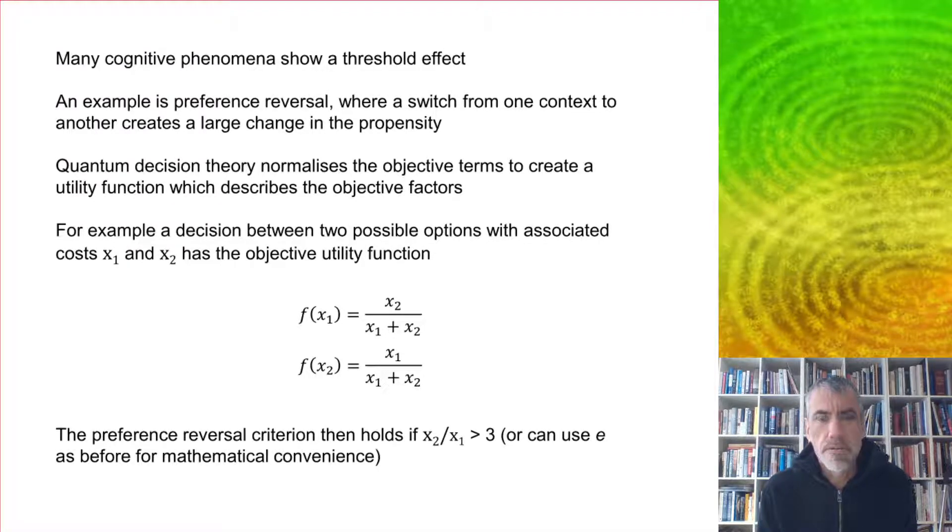Many cognitive phenomena show a threshold effect. An example is preference reversal, where a switch from one context to another creates a large change in propensity.